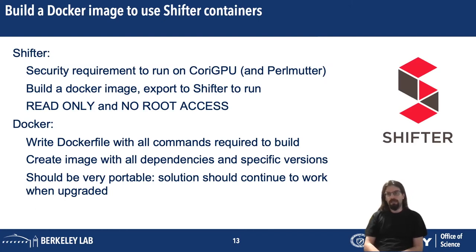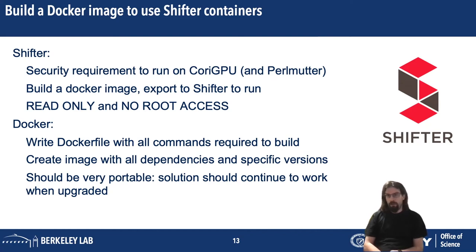Shifter is a requirement for using images and containers on Perlmutter GPU and is likely to persist forwards. To use Shifter, we build a Docker image externally to Shifter and then export it to Shifter. Shifter does impose some restrictions that Docker does not — for example, Shifter images are read-only and cannot be written to, and Shifter users do not have root access. This constrains what we can do and requires that we do as much as possible in the Docker development environment. We write a Docker file with all the commands required to build our environment, create an image with all dependencies and specific versions, bundle those up, and put them to Docker Hub from where they can be pulled down to Shifter. In principle, this should be a very portable solution that continues to work when we upgrade.